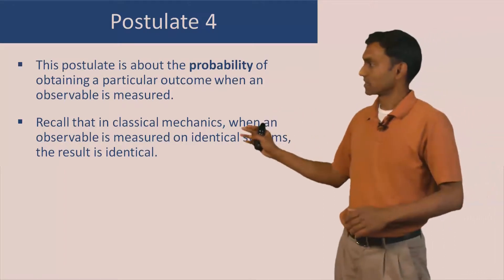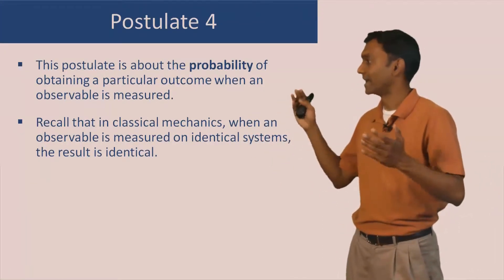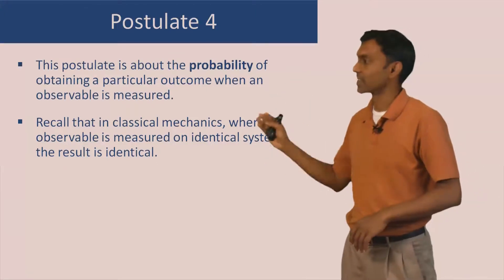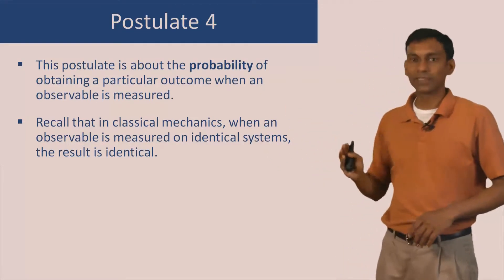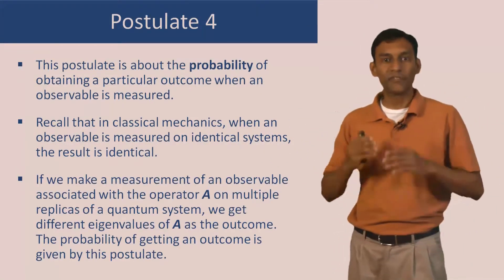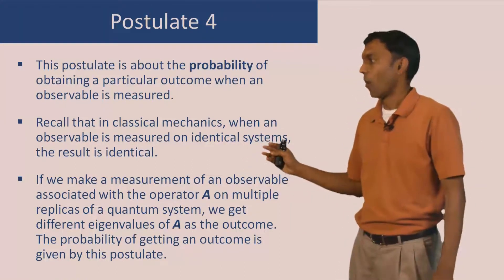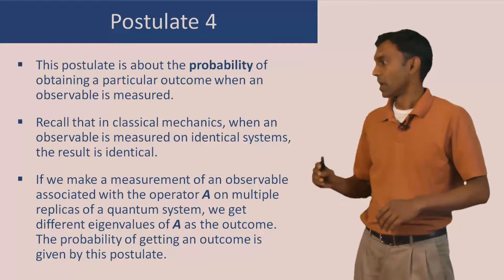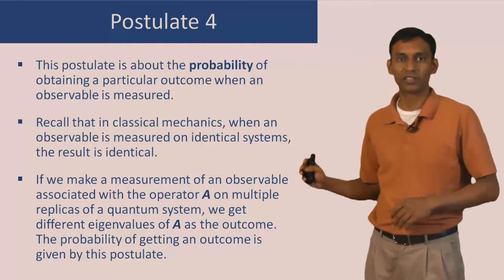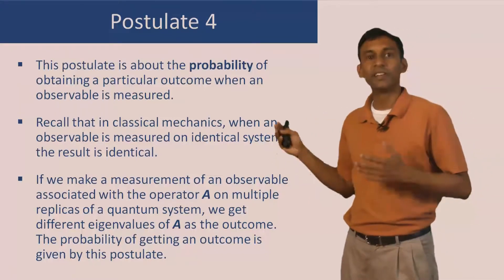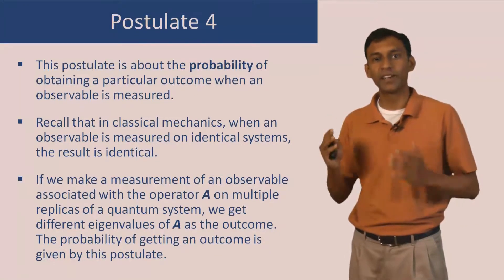Recall that in classical mechanics, when you measure an observable like energy on identical classical systems, you always get the same result. However, that is not the case in quantum mechanics. If we make a measurement of an observable associated with the operator A on multiple replicas of the quantum system, we get different eigenvalues of A as the outcome — we know that from postulate 3 — but you get them with different probabilities and with absolutely definitive probabilities.